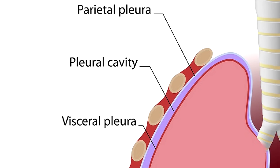Many people confuse the membrane lining with the actual cavity contained within that membrane. For example, when talking about the lung, the pleura is the lining of the membrane itself, and the fluid-filled space inside is the pleural cavity — so you have to watch out for getting those mixed up.